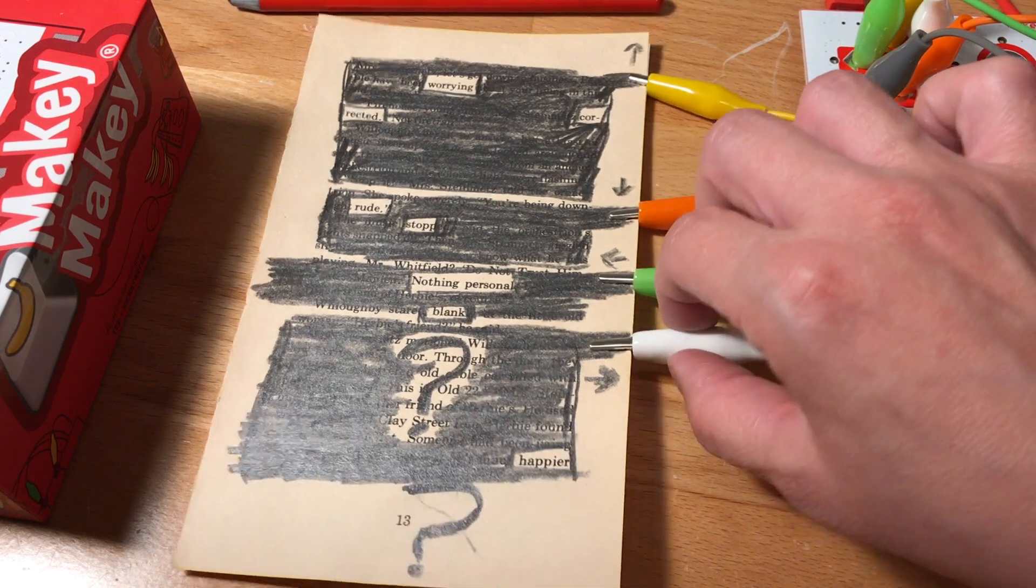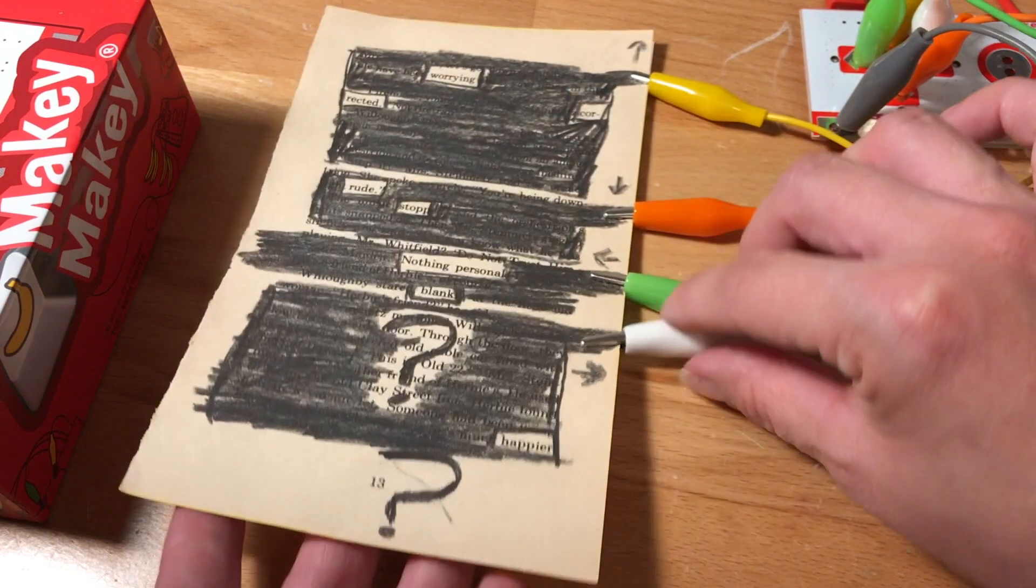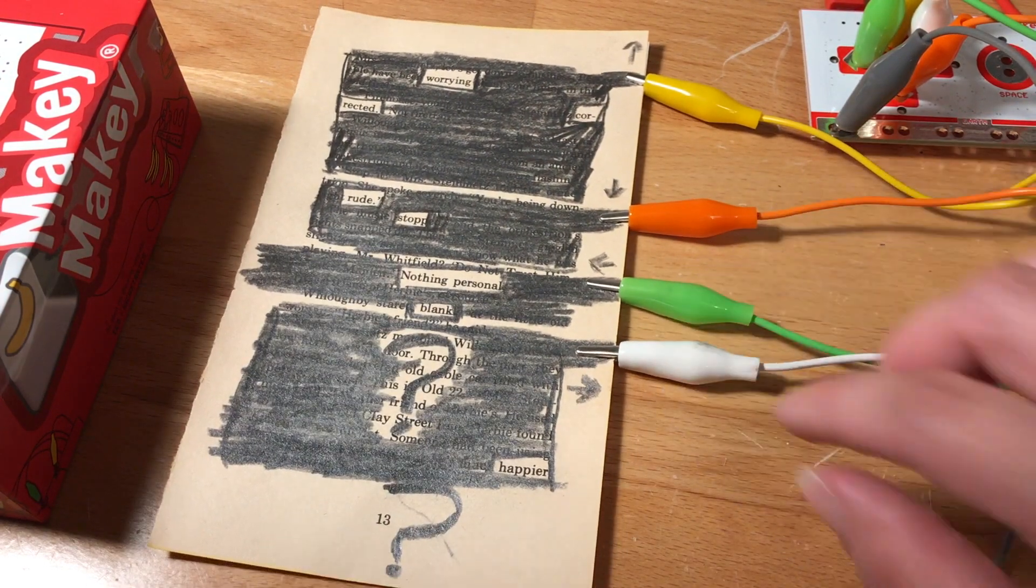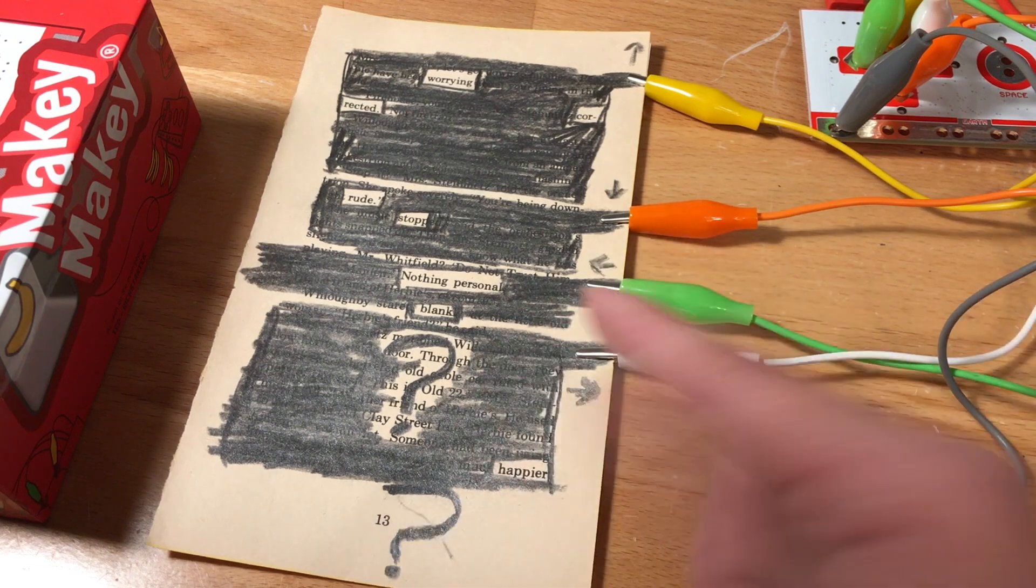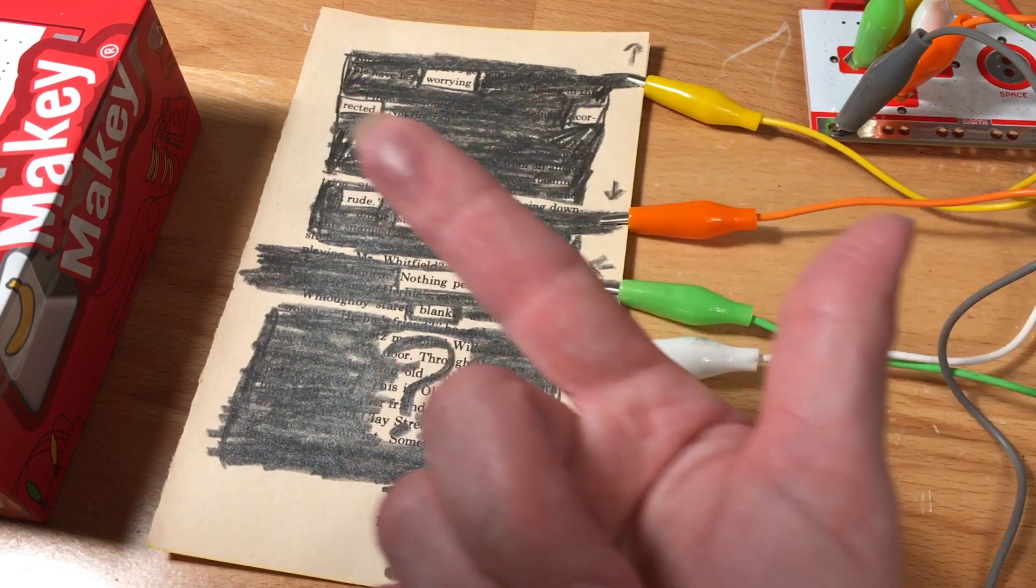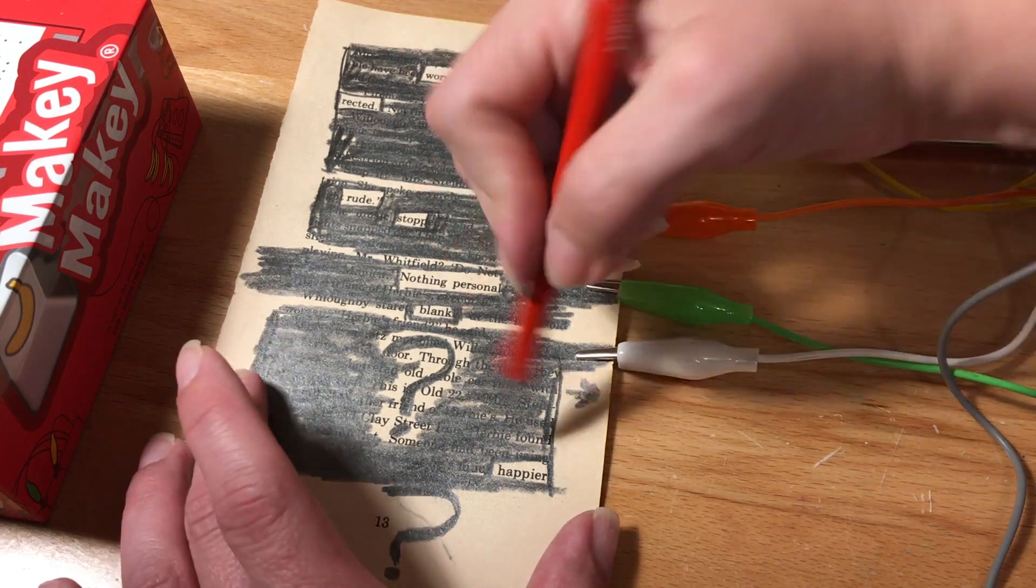Also, since I'm using an old book, I use an index card on the back to give the alligator clip something to clip to. I'm just going to clip directly onto the paper. The graphite, you'll notice, is really thick. It gets smudgy on my finger, so sometimes you do have to redraw to get your circuit working.